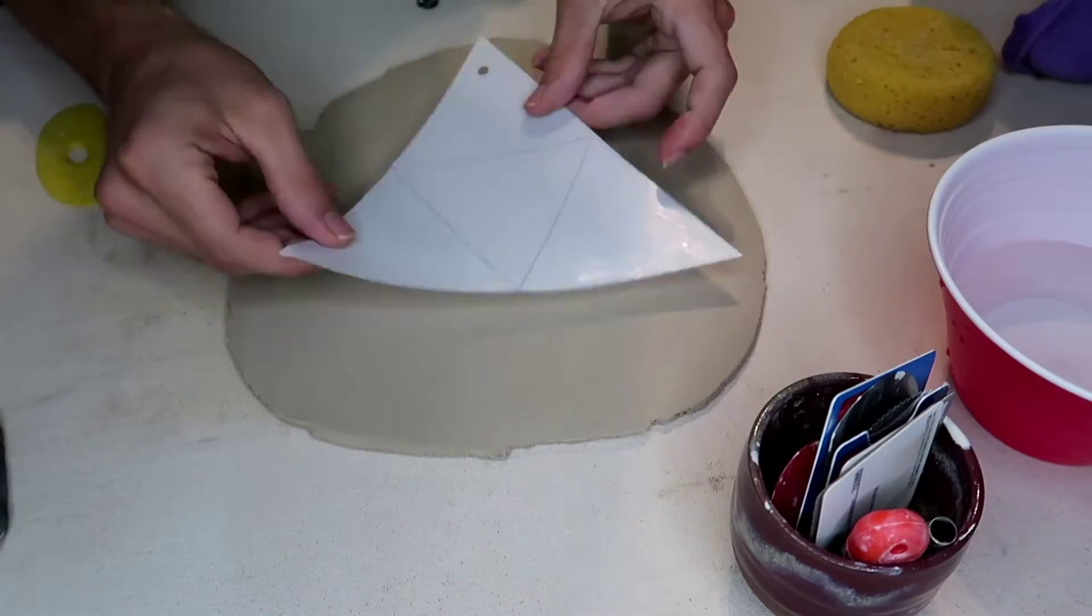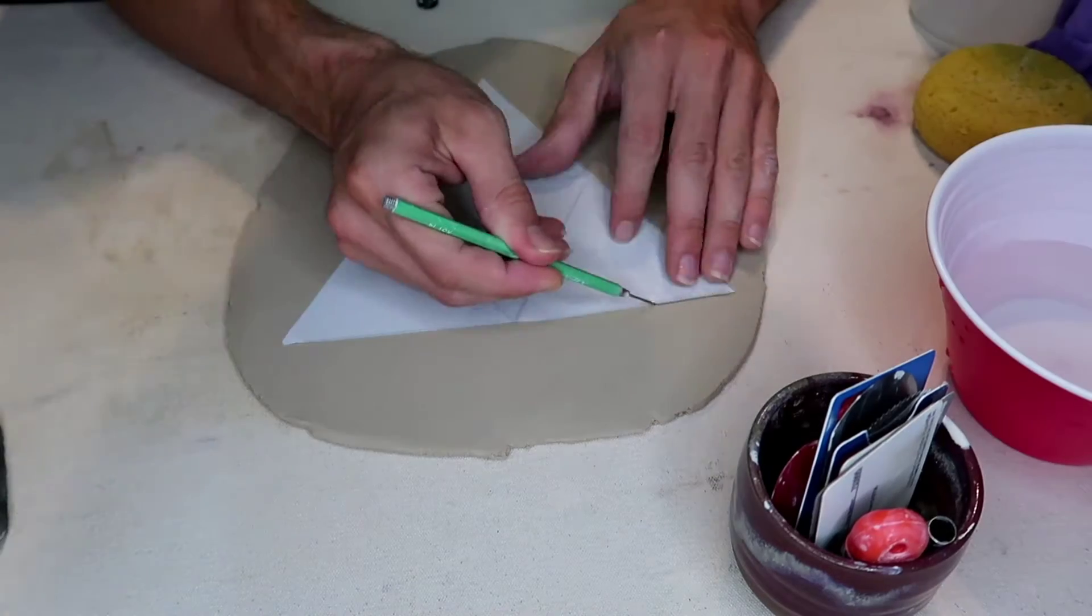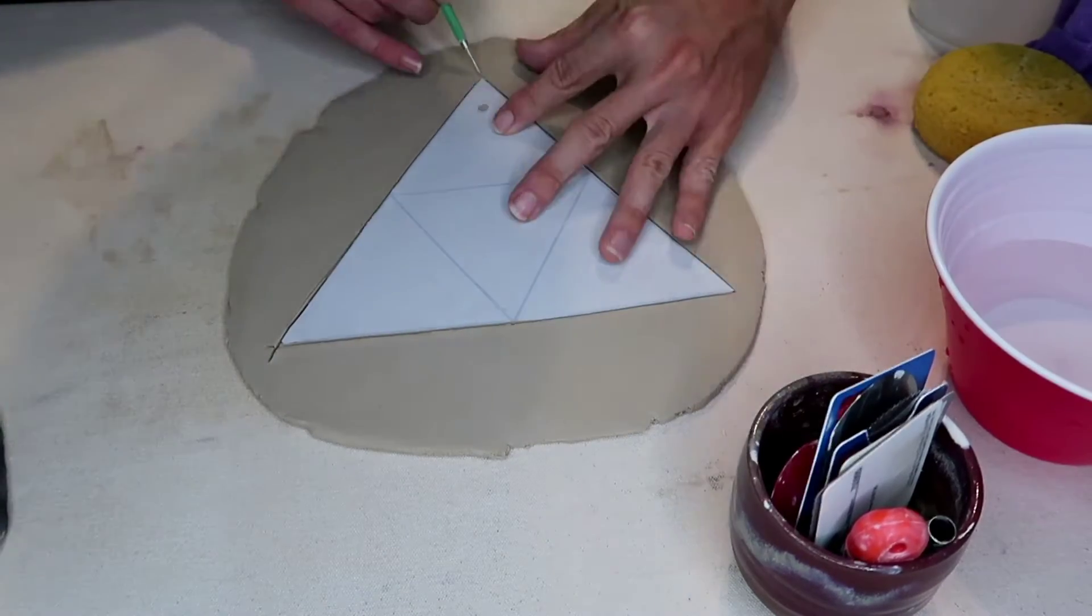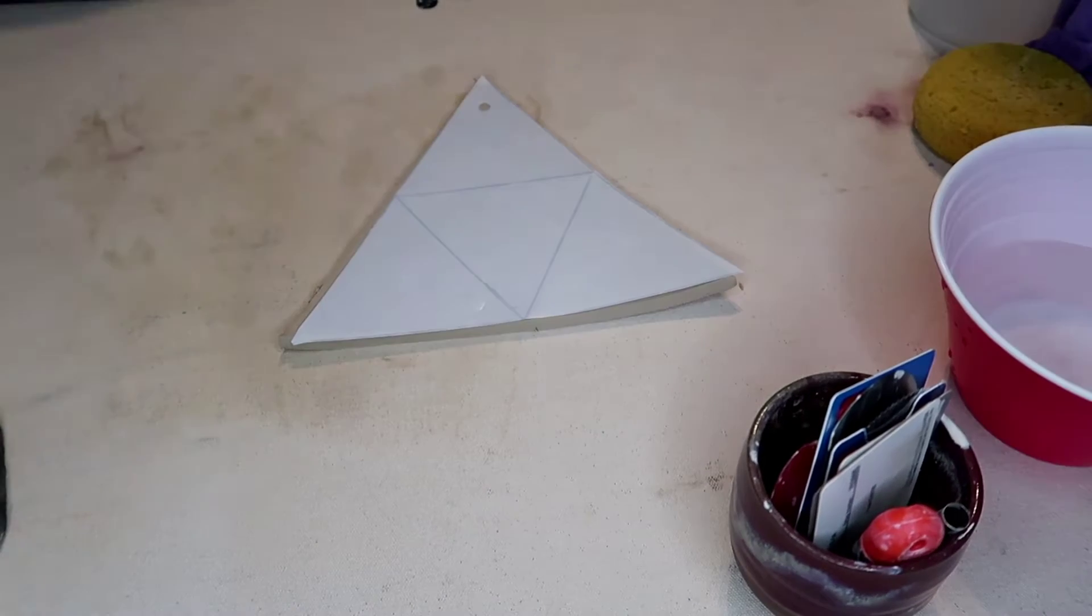First, I'm going to start out with a slab of clay that I've rolled out. I've got a triangle template I've made. I'm going to trace around it with my needle tool to cut out the clay. I'm going to take the scraps and put them to the side.